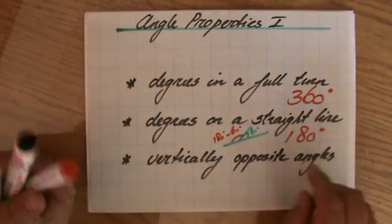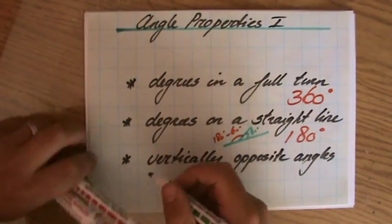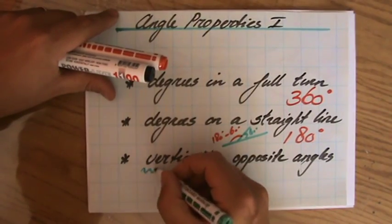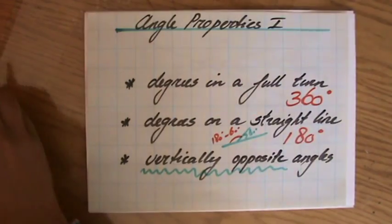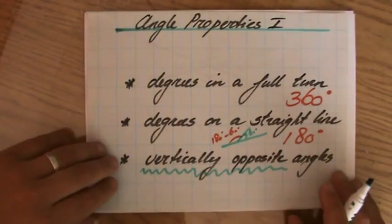You need to be familiar with that language, vertically opposite. So write it down 10 times. Make a little poster, hang it on your walls of your bedroom. Then you will never forget vertically opposite angles.